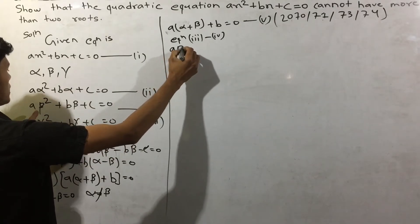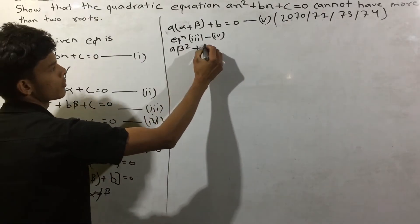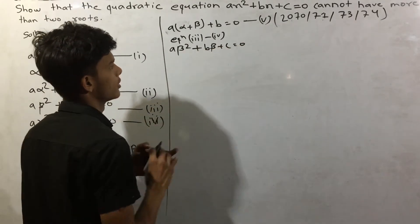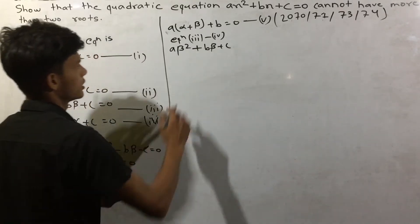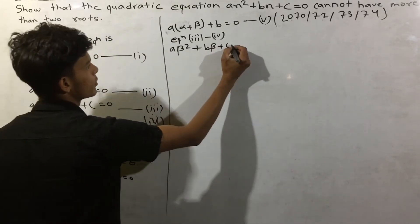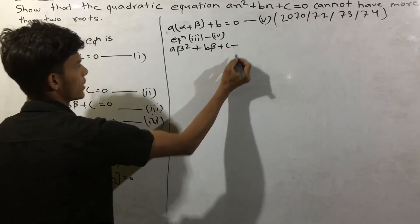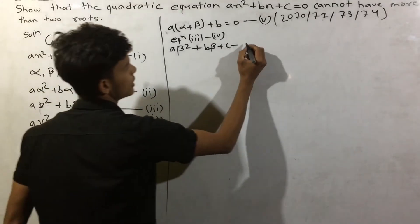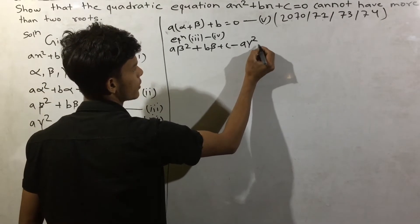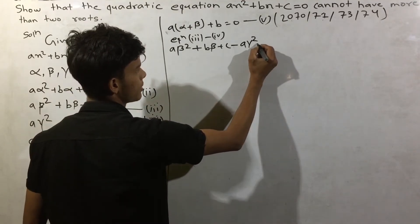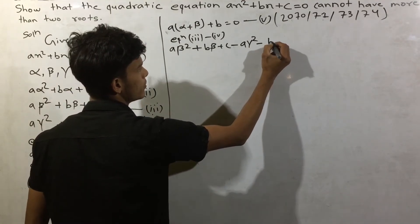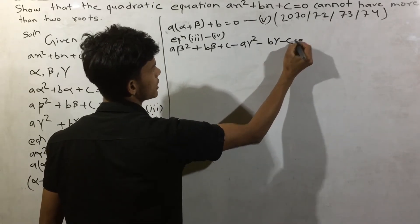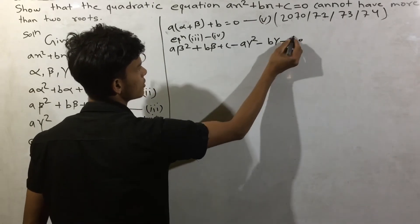a beta squared plus b beta plus c is equal to zero. This is the first equation, the third equation, and the fourth equation. The fourth equation is a gamma squared, and b gamma minus c is equal to zero.